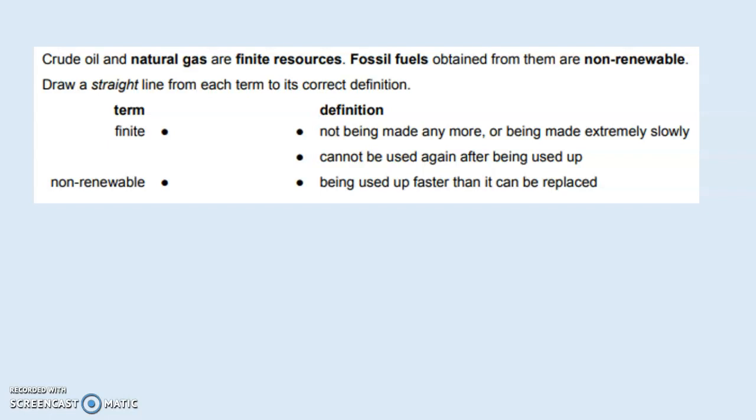Crude oil and natural gas are finite resources. Fossil fuels obtained from them are non-renewable. Draw a straight line from each term to its correct definition. You've got two terms here and three definitions, so one is a distractor. What is finite and what is non-renewable? Finite is a resource that is not being made anymore or it's being made very slowly. We know crude oil is a finite resource because it takes billions of years. Non-renewable means it's being used up faster than it can be replaced.